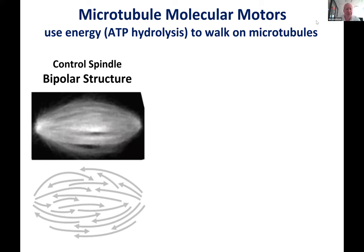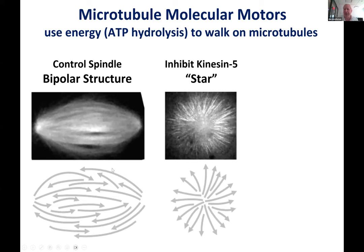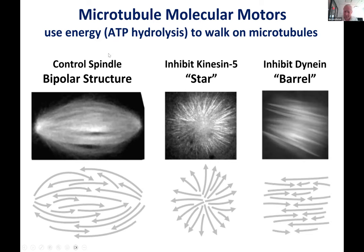A clear demonstration of motor importance in the spindle: a normal spindle is a bipolar structure with two poles and chromosomes in the middle. If you inhibit a single molecular motor called kinesin-5, the spindle reorganizes into an aster-like structure. If you inhibit dynein, the spindle becomes barrel-shaped. If you simultaneously inhibit both kinesin-5 and dynein, you get a structure that looks pretty much like the control bipolar spindle. The question is how to understand this and other types of microtubule self-organization.